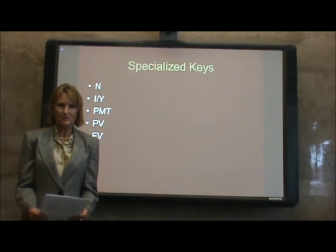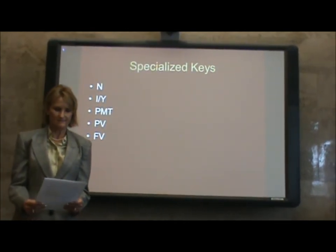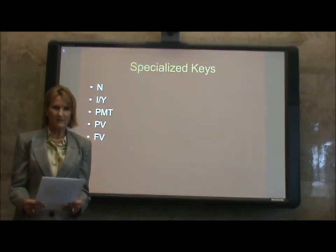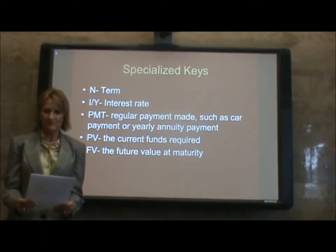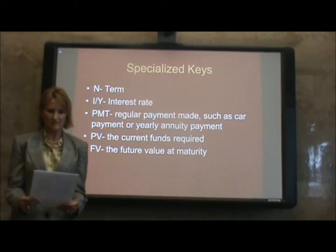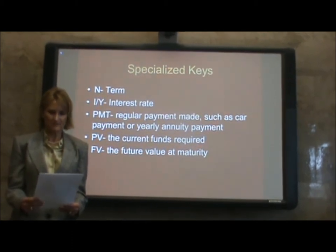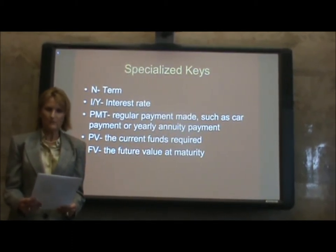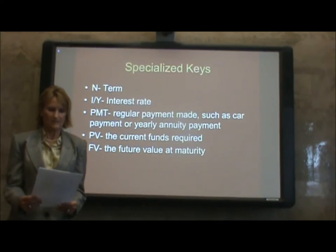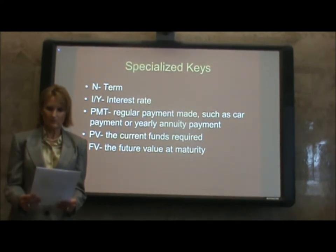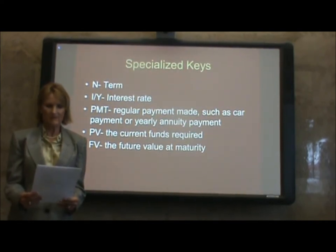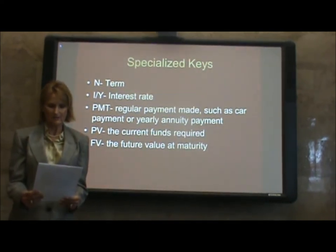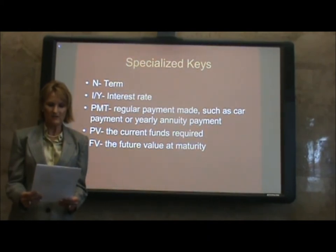These specialized keys are as follows: N, I over Y, PMT, PV, and FV. Each of these buttons aligns with a given or found variable used to find financial rates such as loans. N is for term. I over Y is for the interest rate. PMT is the regular payment made, such as a car payment or yearly annuity payment. PV is the current funds required. FV is the future value at maturity.